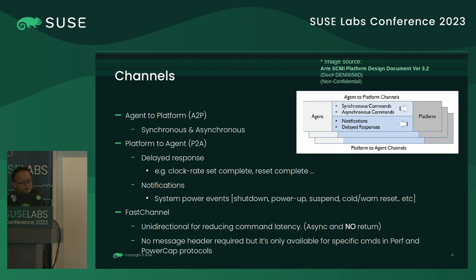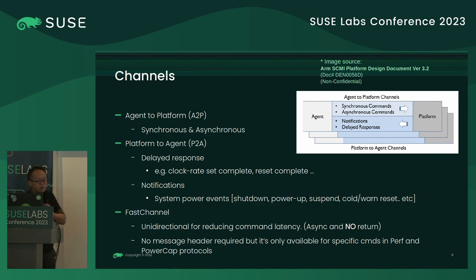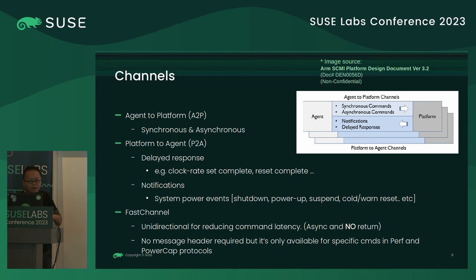There is a special channel called the fast channel. It's unidirectional and designed to reduce command latency. The SCMI request is delivered and the client doesn't need to wait for a result — it just returns, working as a synchronous mode. In this channel there is no need for a message header. It's only supported by specific commands in the performance and power cap protocols.